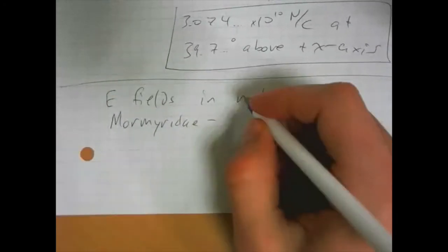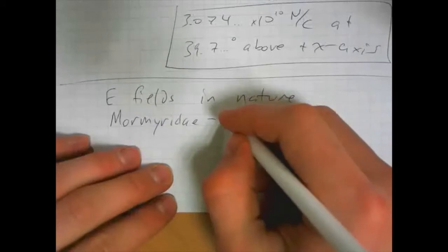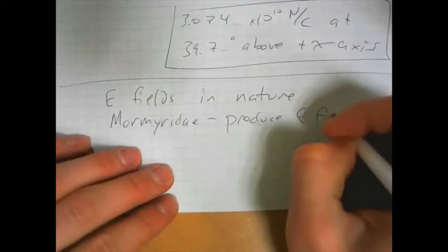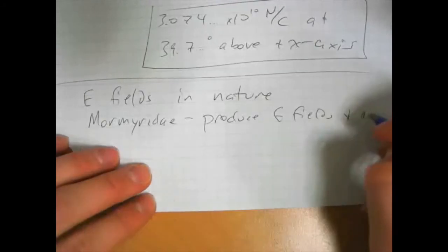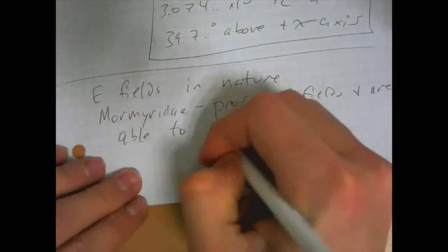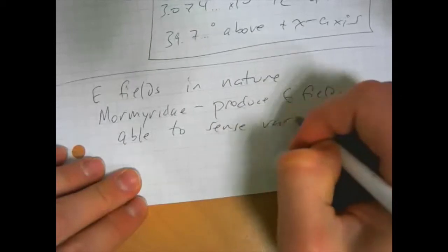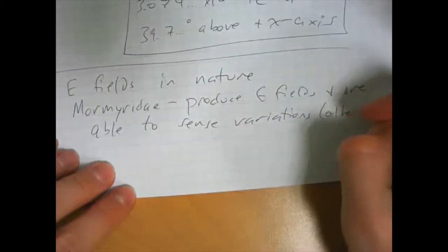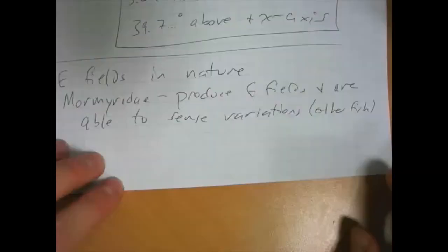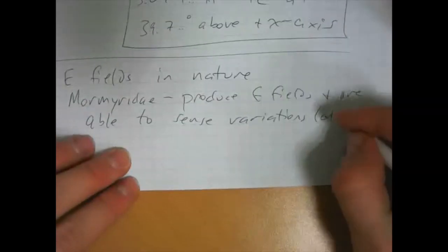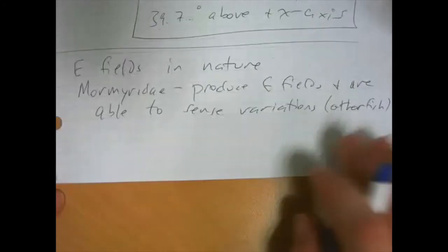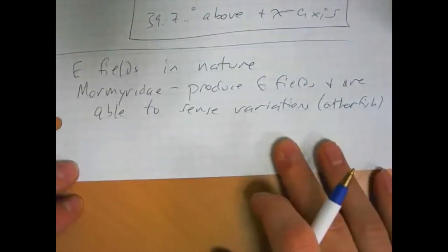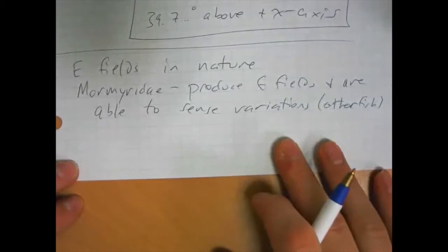They produce e-fields, and then are able to sense variations caused by things like other animals. And so they use that to sense what's going on around them, which is really cool. It's kind of like the force. These fish just, they know what's around them by sensing the electric field.